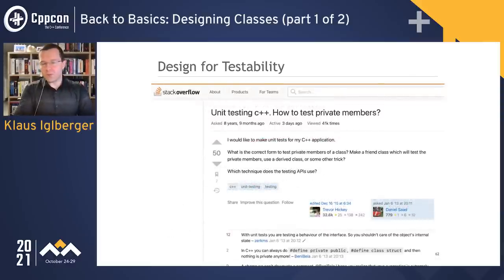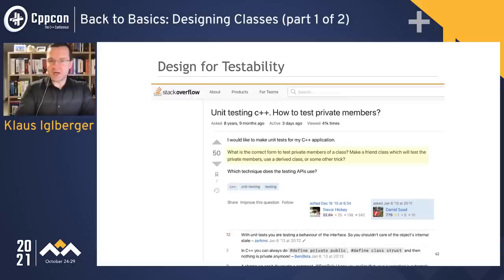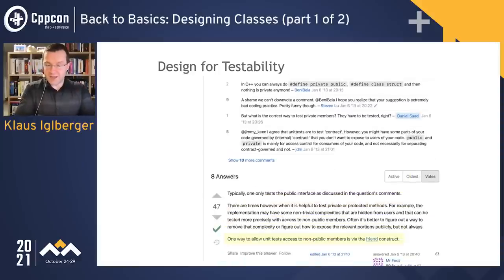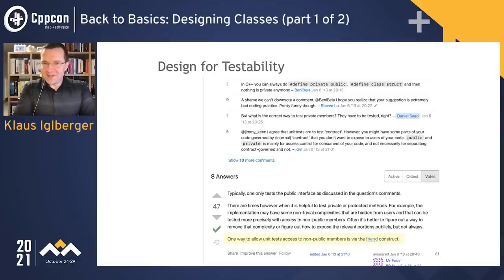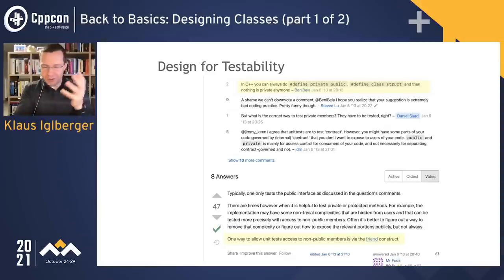In that situation, most people search online and end up at Stack Overflow. I found an entertaining thread about how to test private members. Someone asks: 'What is the correct way to test private members of a class?' The accepted answer says: 'One way is via the friend construct.' But there's also a very funny answer: in C++, you can always do '#define private public.' That is definitely something to think about — and then cry in horror. Of course you should not do this; it's horrific. Some people take it as serious advice, which is a little dangerous.